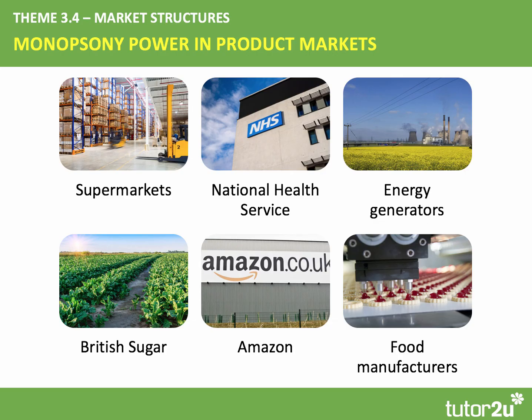There are lots of examples of businesses and organisations with monopsony power. We'll mention the supermarkets, the NHS when they're purchasing drugs from pharmaceutical companies, the power generating companies buying their core raw materials, Amazon — there was a famous article a few years ago by economist Paul Krugman arguing that Amazon's buying power is damaging to independent publishers — and major food manufacturers, who are significant purchasers of raw ingredients for their manufactured processed foods.